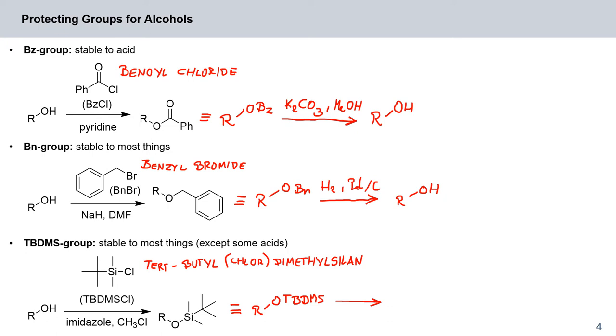And we can cleave that group off with essentially a fluoride source. So silicon binds to oxygen quite well, but the silicon-fluorine bond is even stronger. So we need an F-minus source.